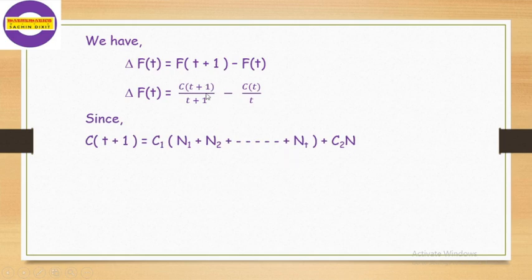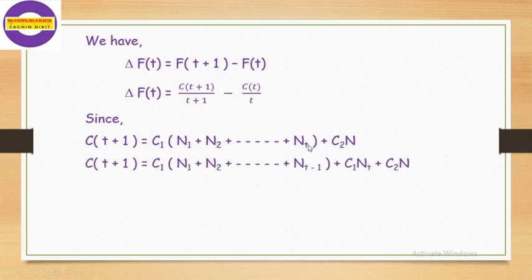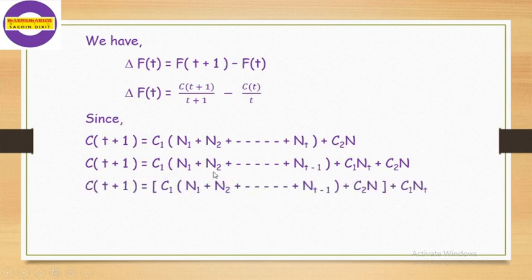First we calculate C(t+1). Like C(t), we have C(t+1) = C1·[n1 + n2 + ... + n(t−1) + n(t)] + C2·N. We split the summation: C1·[n1 + n2 + ... + n(t−1)] + C2·N + C1·n(t). The first part in brackets is nothing but C(t), so we get C(t+1) = C(t) + C1·n(t).